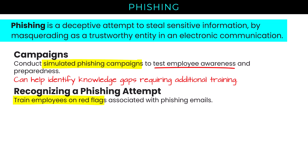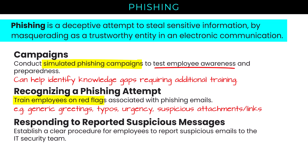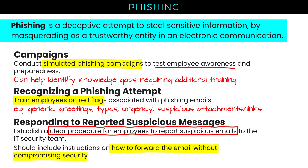We also need to teach employees to recognize a phishing attempt — training them on red flags like generic greetings, typos, urgency, suspicious attachments or links, and unknown sender names or email addresses. We need to establish a clear procedure for employees to report suspicious emails to the IT security team, including how to forward the email without compromising security. The IT security team can investigate, and reports can feed into AI-based cloud email protection services. All anti-phishing and anti-malware email protection today uses AI and machine learning, so user reports help train the service to do better.